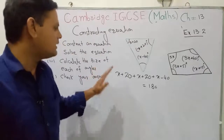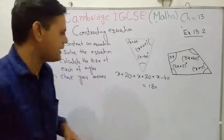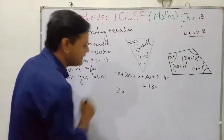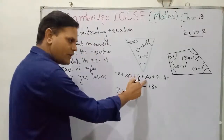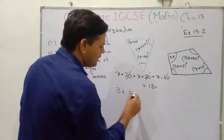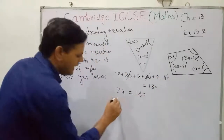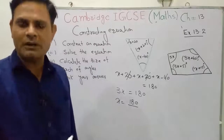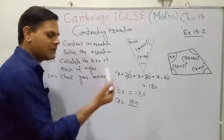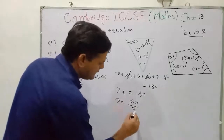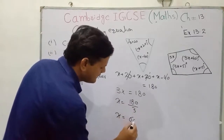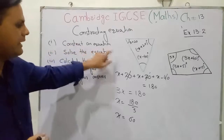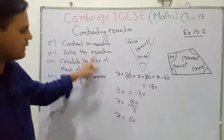First, collect the variable quantities and constant quantities separately. The x terms: 1 + 1 + 1 gives 3x. For constants: 20 + 20 − 40 = 0, so they drop out. This gives 3x = 180. When a number is multiplied by a variable, take it to the other side and divide. So x = 180 ÷ 3 = 60.